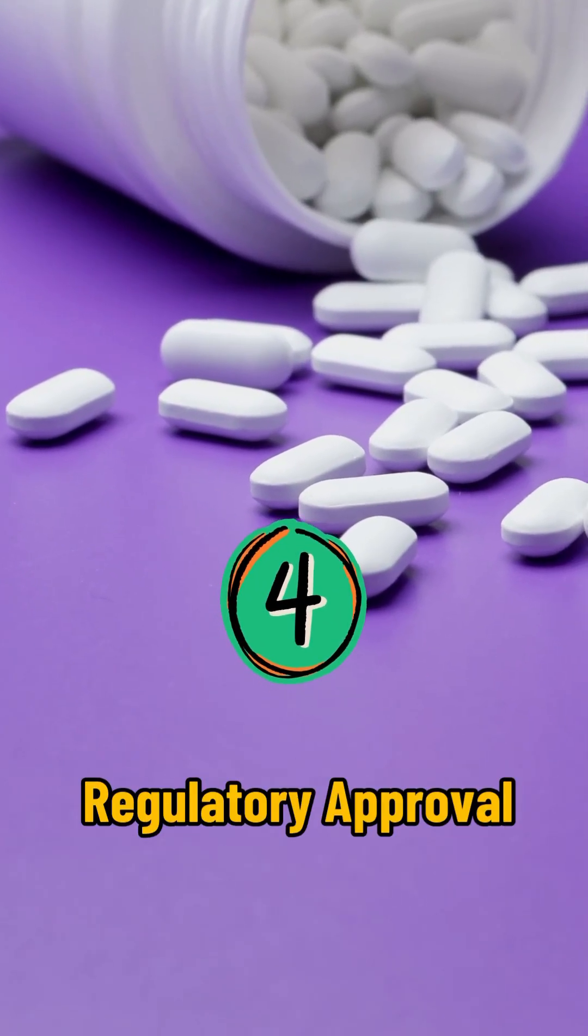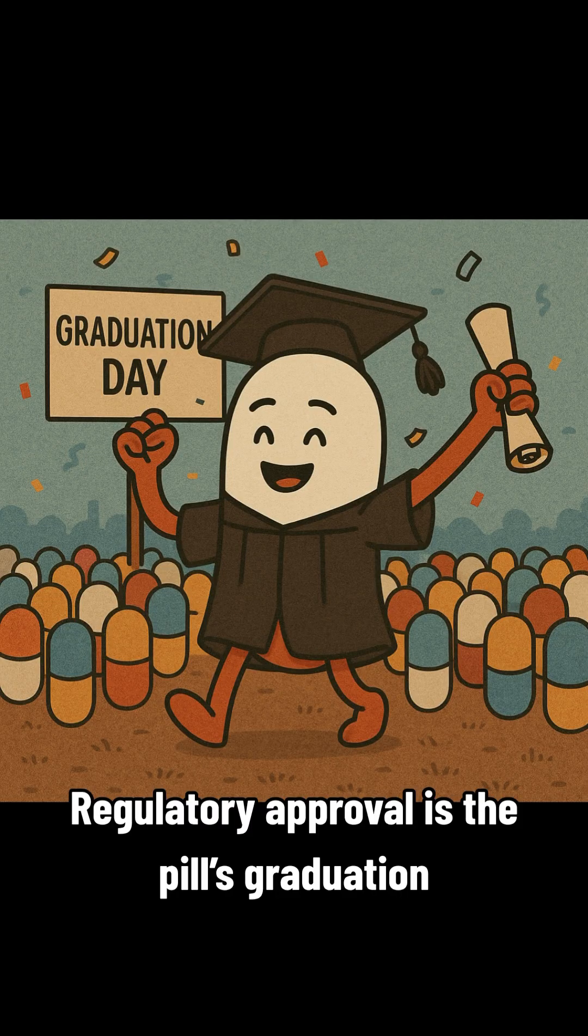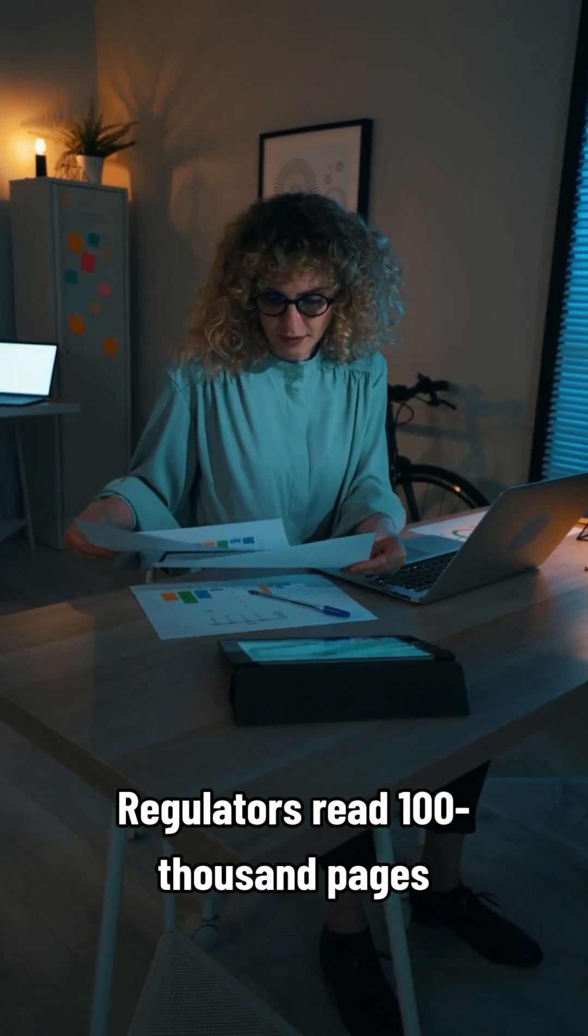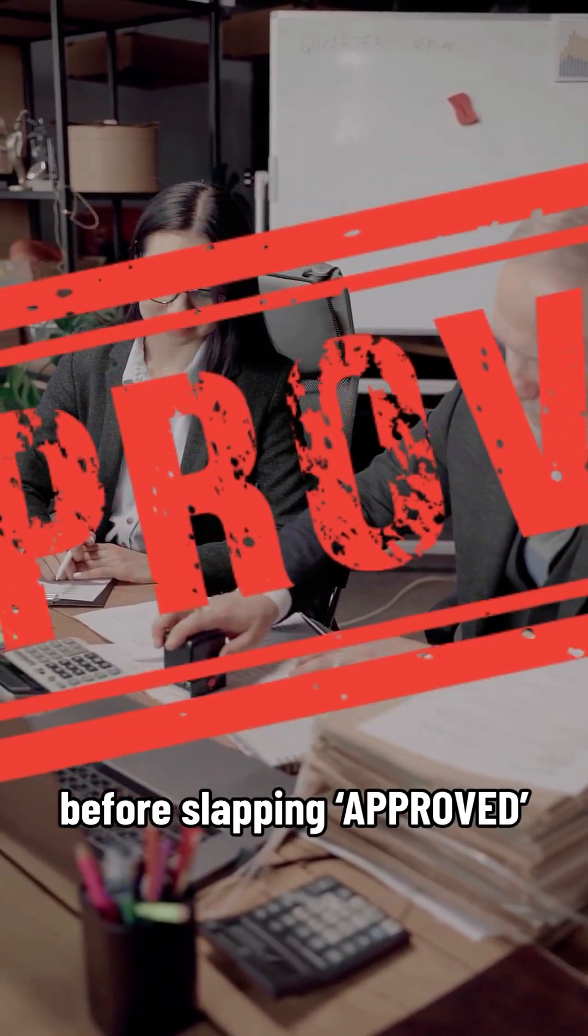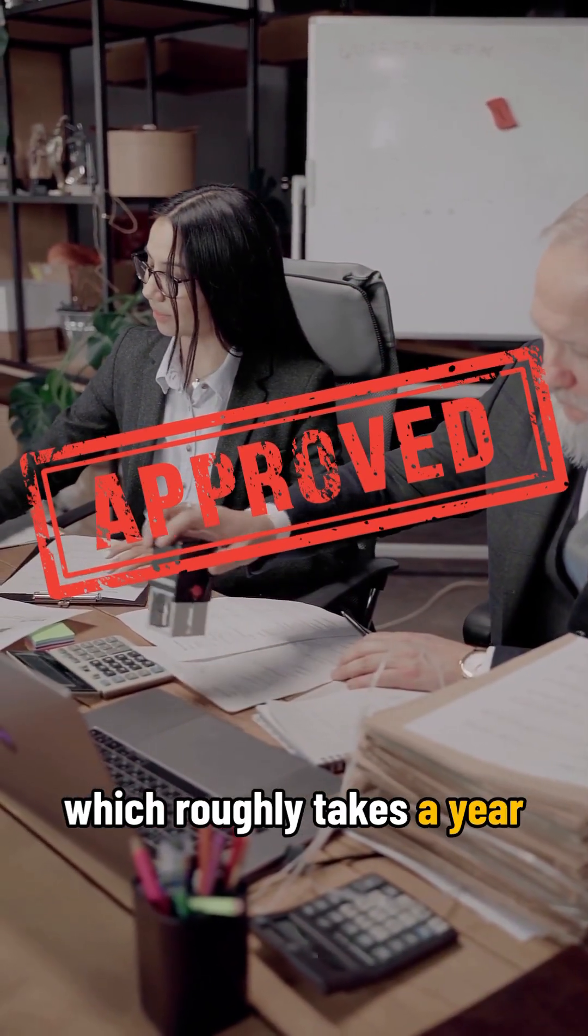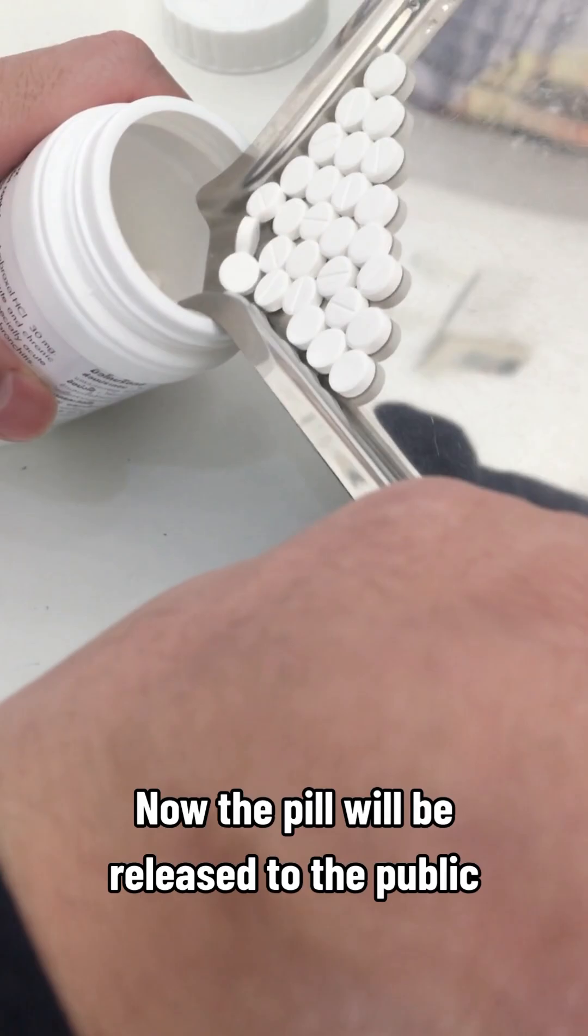Step 4. Regulatory Approval. Regulatory approval is the pill's graduation. Regulators read 10,000 pages before stamping approved, which roughly takes a year. Now the pill will be released to the public.